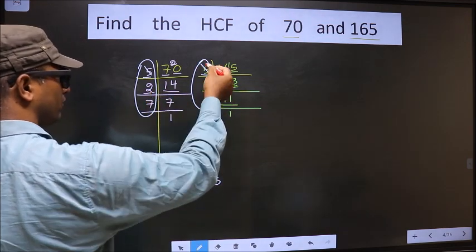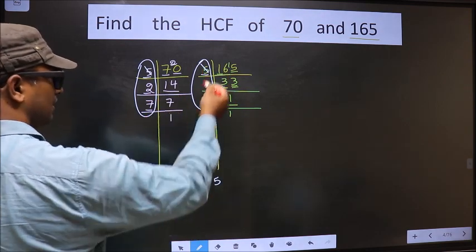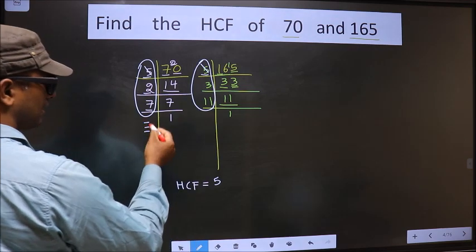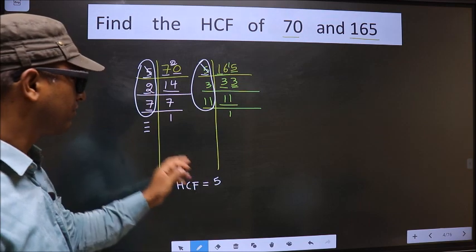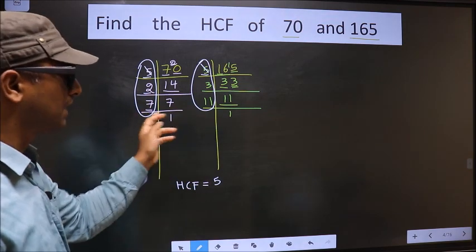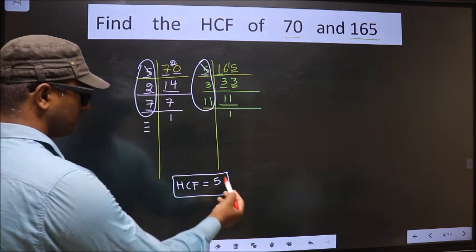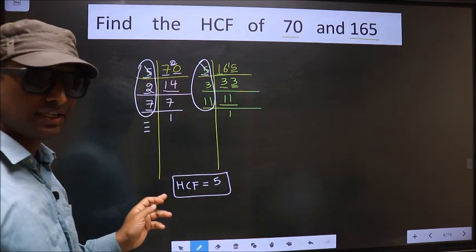Next number is 2. Do we have 2 here? No. Next number is 7. Do we have 7 here? No. No more numbers are left. We have only one number, 5, present in these two places. So this is our HCF. Am I clear?